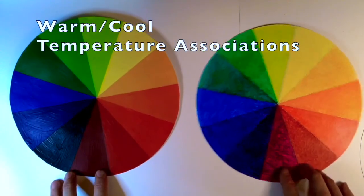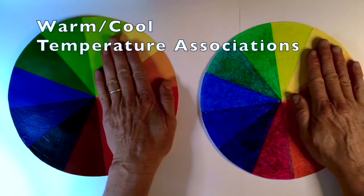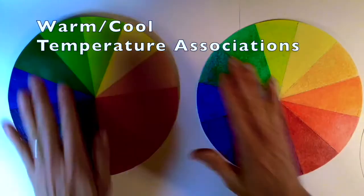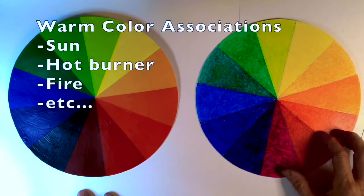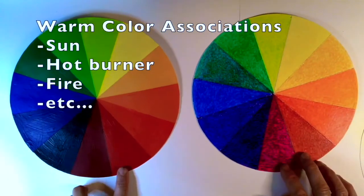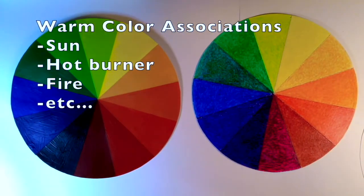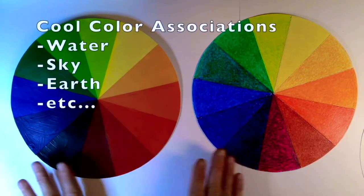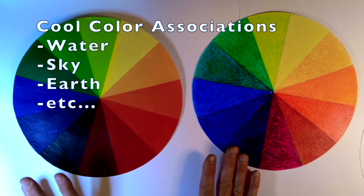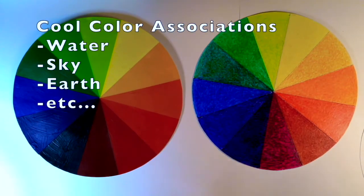You can see that there's clearly a difference between the warm and cool side. With warm colors, we tend to associate with things that are hot like the sun or like a stove top burner that turns red. With cool colors we tend to associate with things like the ocean or the sky.